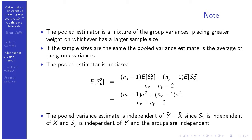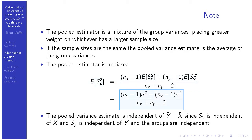The pooled estimator is a mixture of the group variances placing bigger weight on whichever one has the larger sample size. If the sample sizes are the same, all you have to do is average the two variances. The pooled estimate is unbiased — if you take the expected value of s_p squared, you use the fact that both individual group variance estimators are unbiased, and then you wind up with the result.